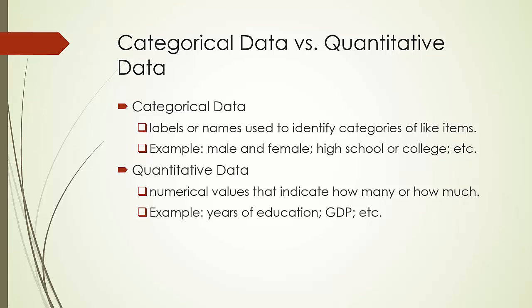Quantitative data are numerical values that indicate how many or how much. For example, the years of education of each employee, or the GDP of the US in a given year.